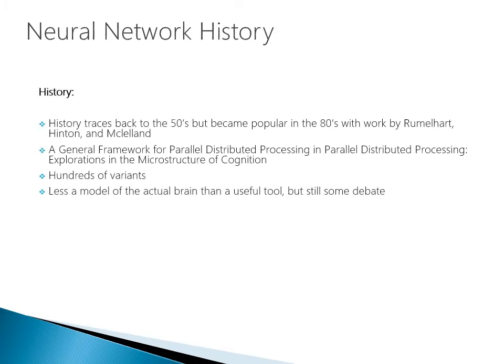The history of artificial neural networks is actually very rich. It traces back to the 1950s, but it really became popular in the 1980s with the work by Rummelhart, Hinton, and McIsland — "A General Framework for Parallel Distributed Processing" and "Parallel Distributed Processing: Explorations in the Microstructure of Cognition." This is the main work that jump-started the neural network movement. There are hundreds of variants to the approach, and it's really less a model of the actual brain than a useful tool, but there's still some debate on the subject.